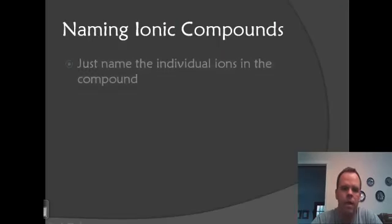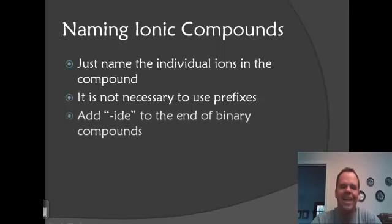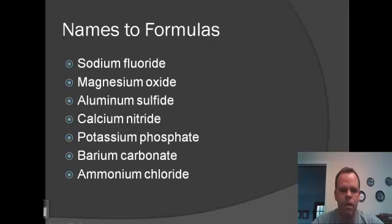When you name an ionic compound, we name the individual ions within the compound. We do not use any prefixes such as mono, di, or tri. And we add an IDE ending on the end of binary compounds. So if it's two elements bonded together, the second element will get an IDE ending. Drop the ending of the element and change it to IDE. So let's look at some examples of this.